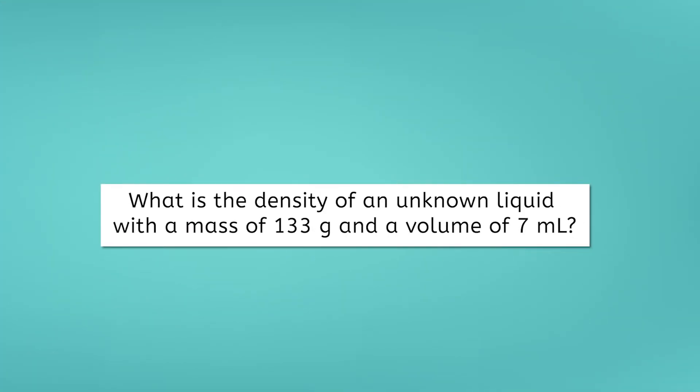Our first example asks, What is the density of an unknown liquid with a mass of 133 grams and a volume of 7 milliliters? Our first step is to ask yourself, What information do I have? Well, we have mass and volume. We also know that we are solving for density. So that is our unknown and can be labeled x. Let's write that down.